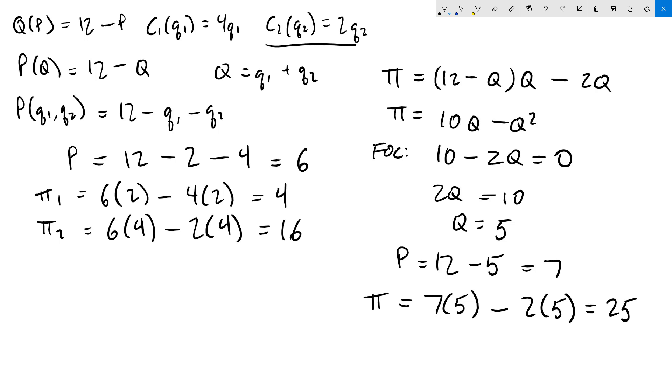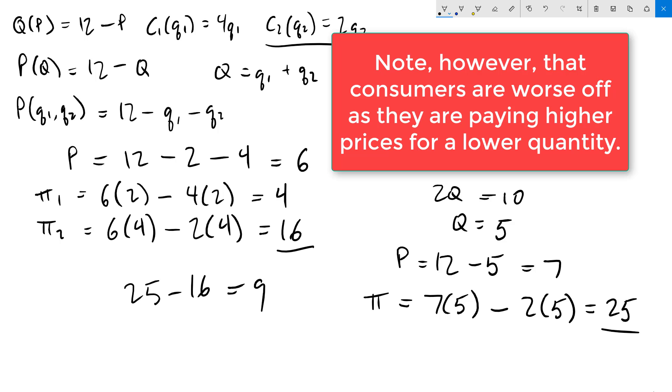We can see that operating as a monopoly, firm 2 would make considerably more profit than what they would have as part of the duopoly. 25 versus 16. Final question asks, how much would firm 2 be willing to pay to buy out firm 1 and become a monopoly? If they didn't buy them out, they would get 16. If they do, they would get 25. So the most they would be willing to pay would be 25 minus 16, which is 9. Since firm 1 would get a profit of 4 by continuing to operate as part of the duopoly, they would be willing to accept anything above 4, so there's room in there to make a deal.